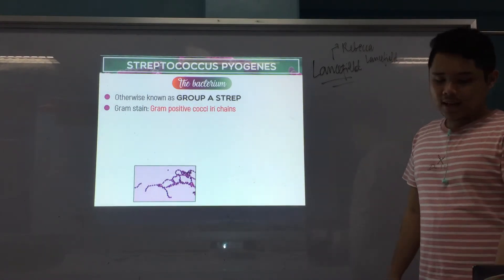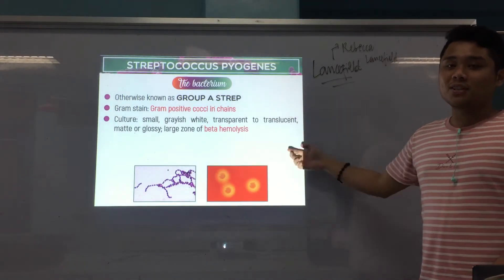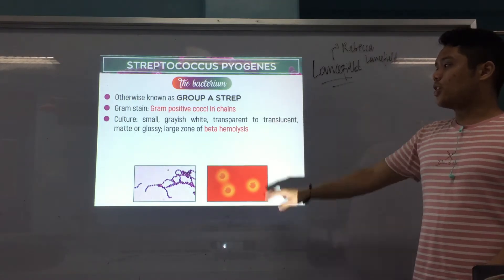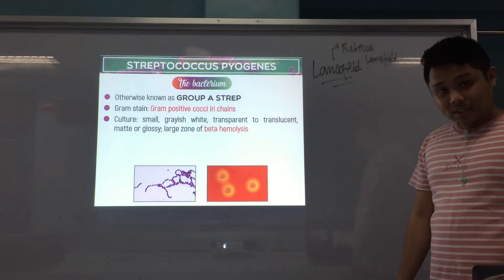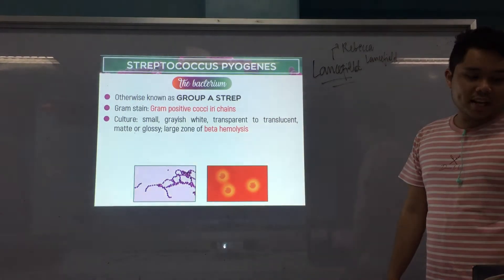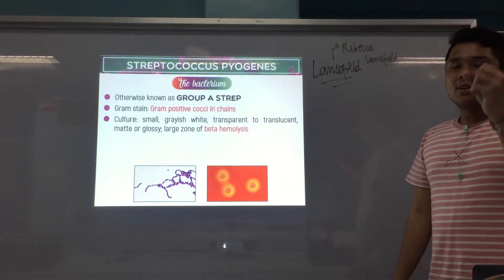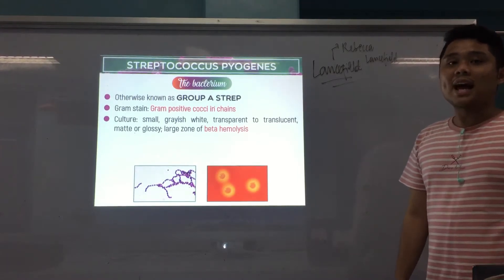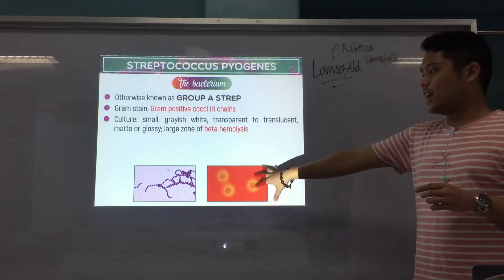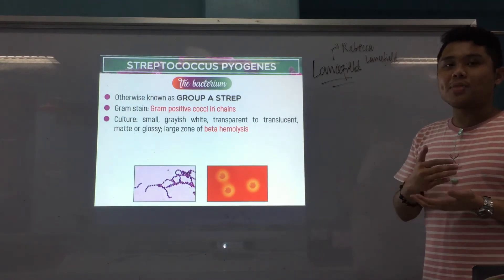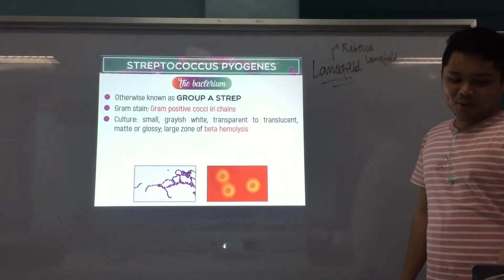Since it's cocci, it is gram-positive. On culture in a blood agar plate, colonies are small, grayish-white, transparent to translucent, matte or glossy, with a very characteristic large zone of beta hemolysis. This makes it a representative of beta-hemolytic Strep species — meaning there is clearing around the colonies when inoculated into a blood-containing culture medium like blood agar plate.